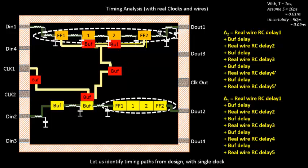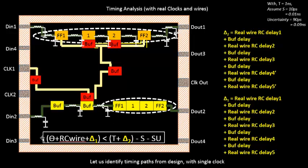For example, doing a timing analysis for flip-flop 1 to flip-flop 2: the launch clock network delay and capture clock network delay remain the same, but the combinational delay from flip-flop 1 to flip-flop 2 through the combinational logic now has a real wire delay rather than an estimated wire delay. The defining equation becomes: combinational delay plus real RC wire delays between flip-flop 1 to logic 1, logic 1 to logic 2, logic 2 to flip-flop 2, plus the remaining terms — the equation is otherwise the same. This is the final stage of the physical design flow.